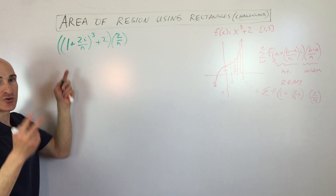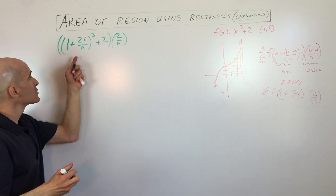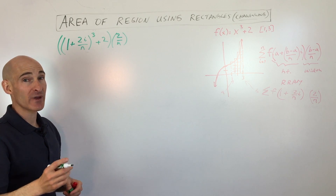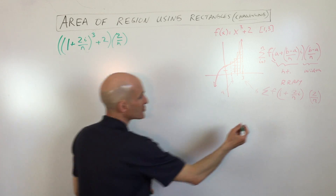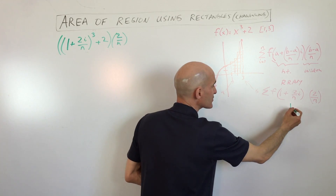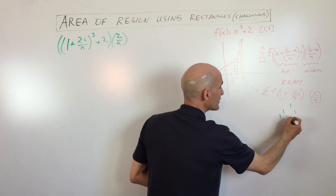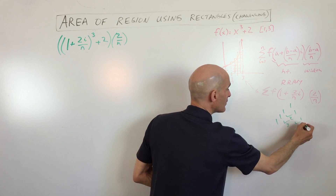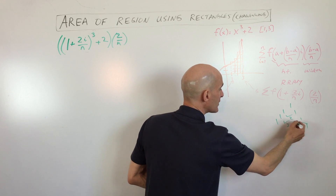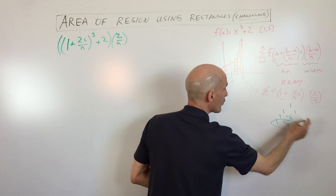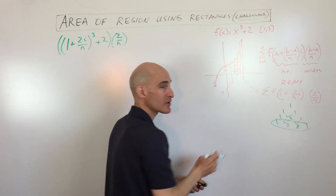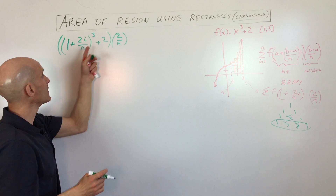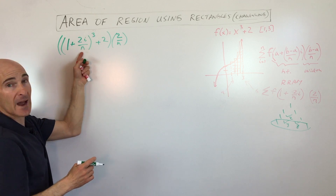You can see this is a binomial — two terms. We're going to use the binomial expansion theorem, Pascal's triangle. If you remember Pascal's triangle: one; one, one; one, two, one; one, three, three, one. We're going to go down to the third row to help us expand this third degree binomial.